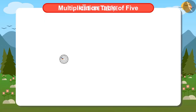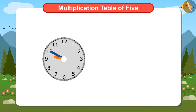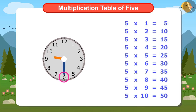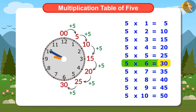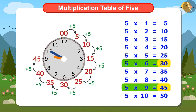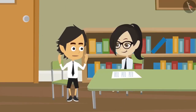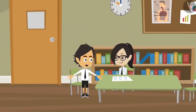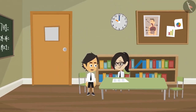Now look at the clock. When the minute hand is at 6, reading the Multiplication Table of 5 up to 6 tells us it is 30 minutes. And when it is on 9, it will be 45 minutes. Yes, this is the right way to read time.